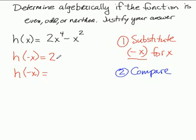So h of negative x would be 2 negative x substituted in to the fourth minus negative x squared. Now the first term ends up becoming 2x to the fourth, and my second term is x squared.